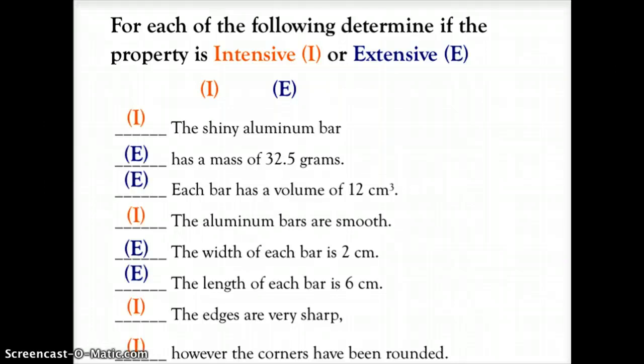So let's see how you did. Shiny aluminum bar—shiny is more of a description, that's an intensive property. E for extensive because we're measuring the mass at 32.5 grams. We're finding the volume of the iron bar, that's a numeric value, extensive.